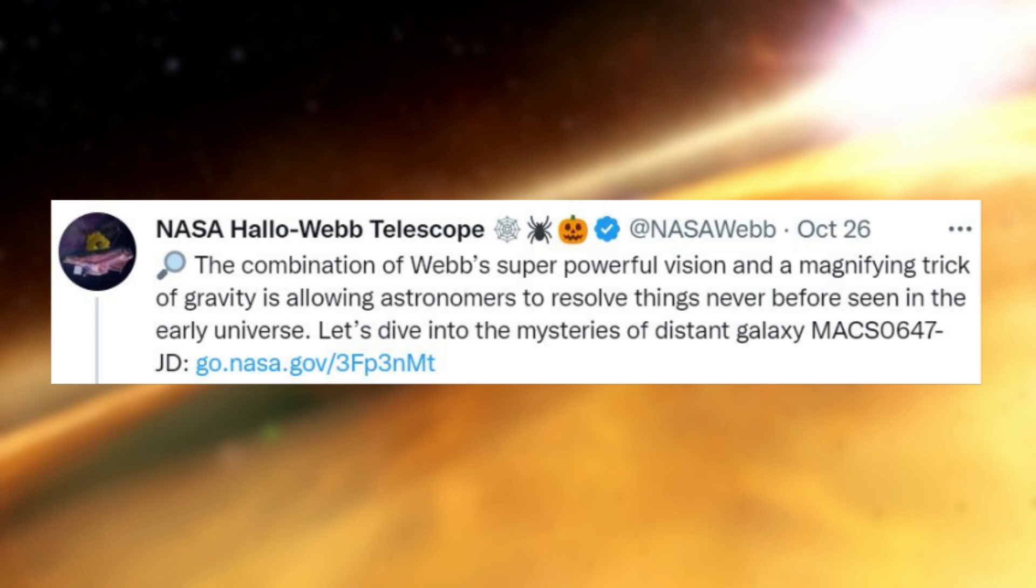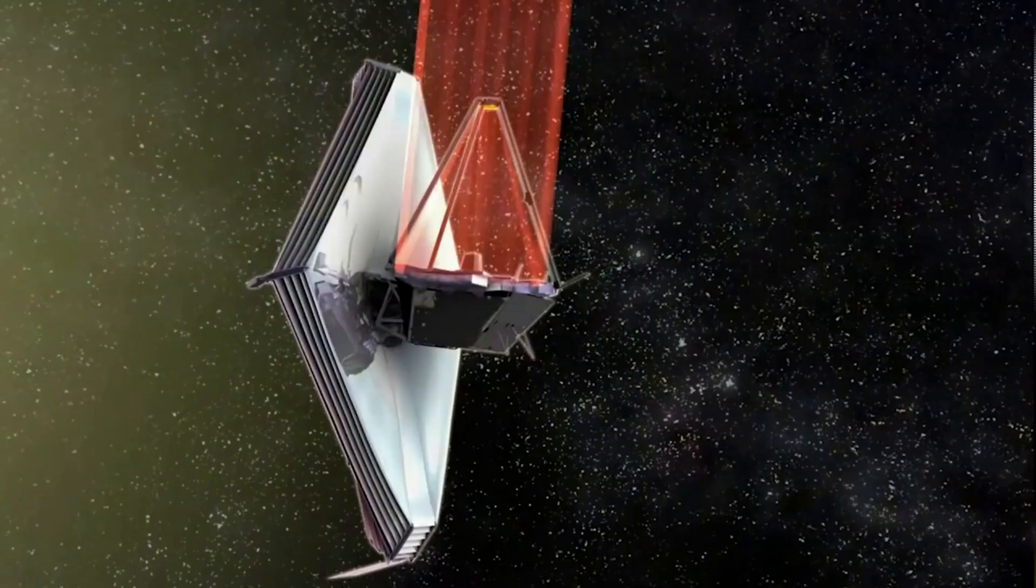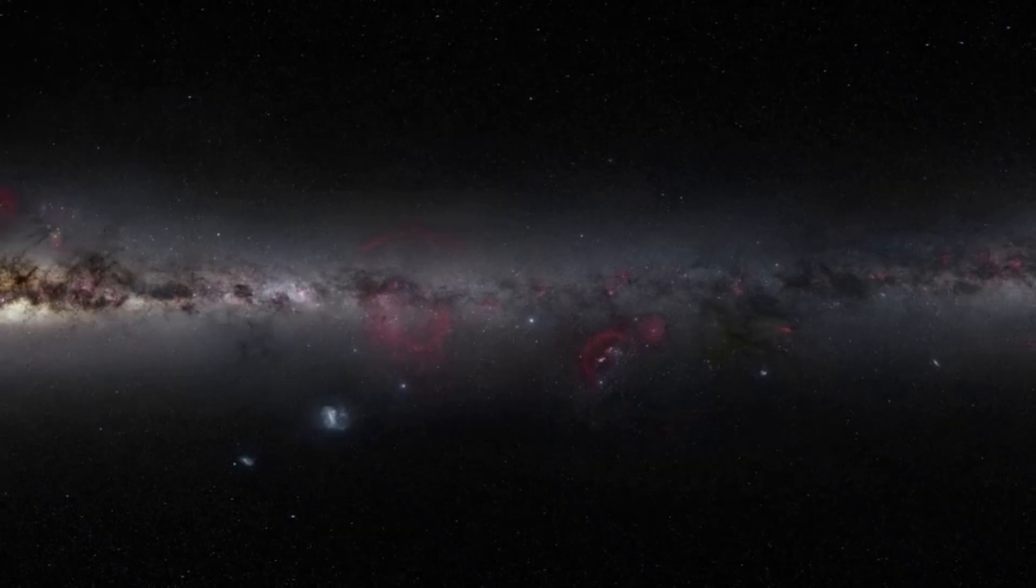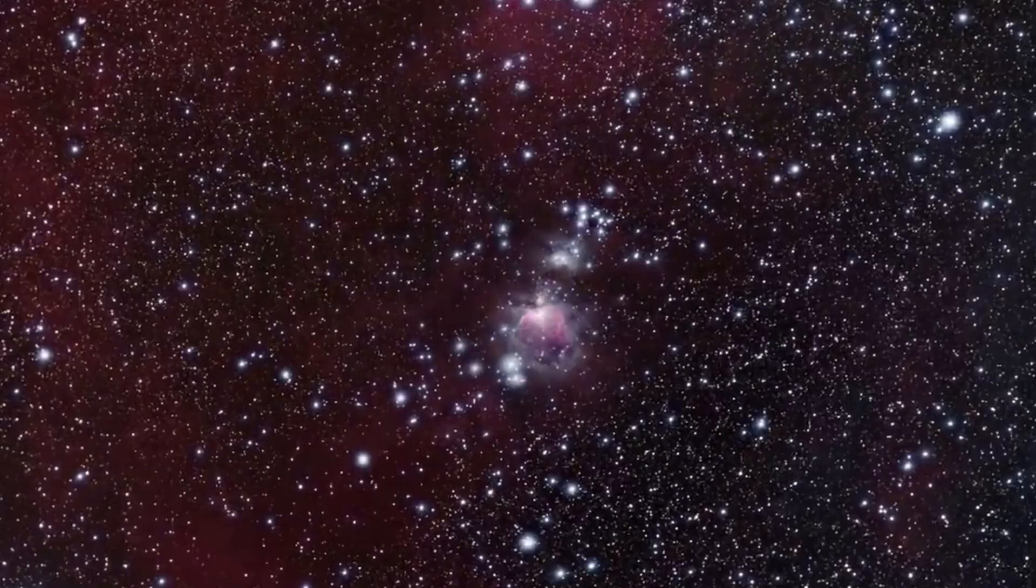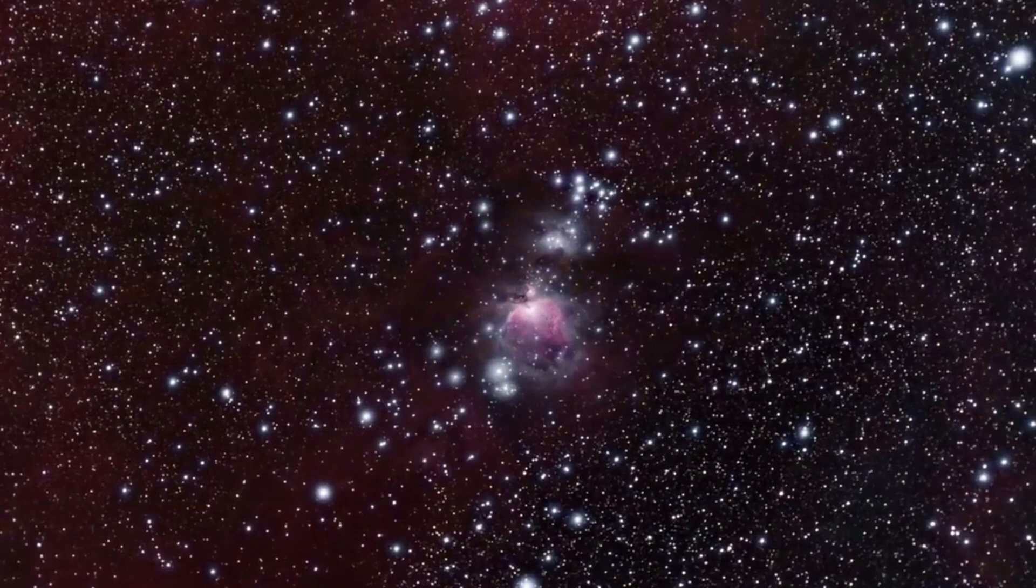Webb was specifically designed to detect the faint infrared light from very distant galaxies and give astronomers a glimpse at the early universe. The nature of galaxies during this early period of our universe is not well known nor understood, but with the help of gravitational lensing by a cluster of galaxies in the foreground, faint background galaxies can be magnified and also appear multiple times in different parts of the image.